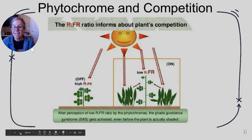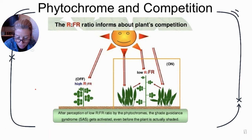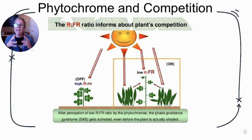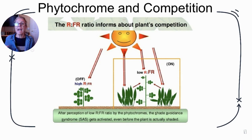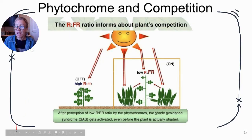Regarding phytochrome and competition: plants grown closer together experience more far-red light and more shade. This encourages them to focus growth upward to out-compete neighboring plants. These plants grow taller in order to compete better and receive more light.